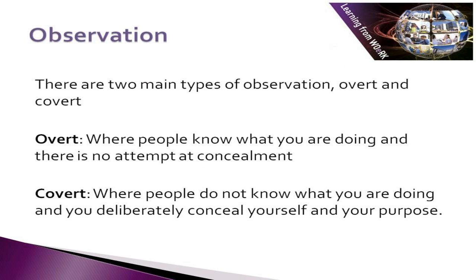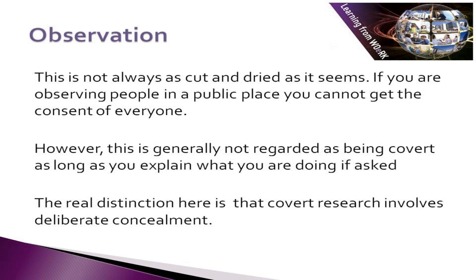There are two main types of observation: overt and covert. Overt is where people know what you are doing, and there is no attempt at concealment. Covert is where people do not know what you are doing, and you deliberately conceal yourself and your purpose. This is not always as cut and dried as it seems. If you are observing people in a public place, you cannot get the consent of everyone.